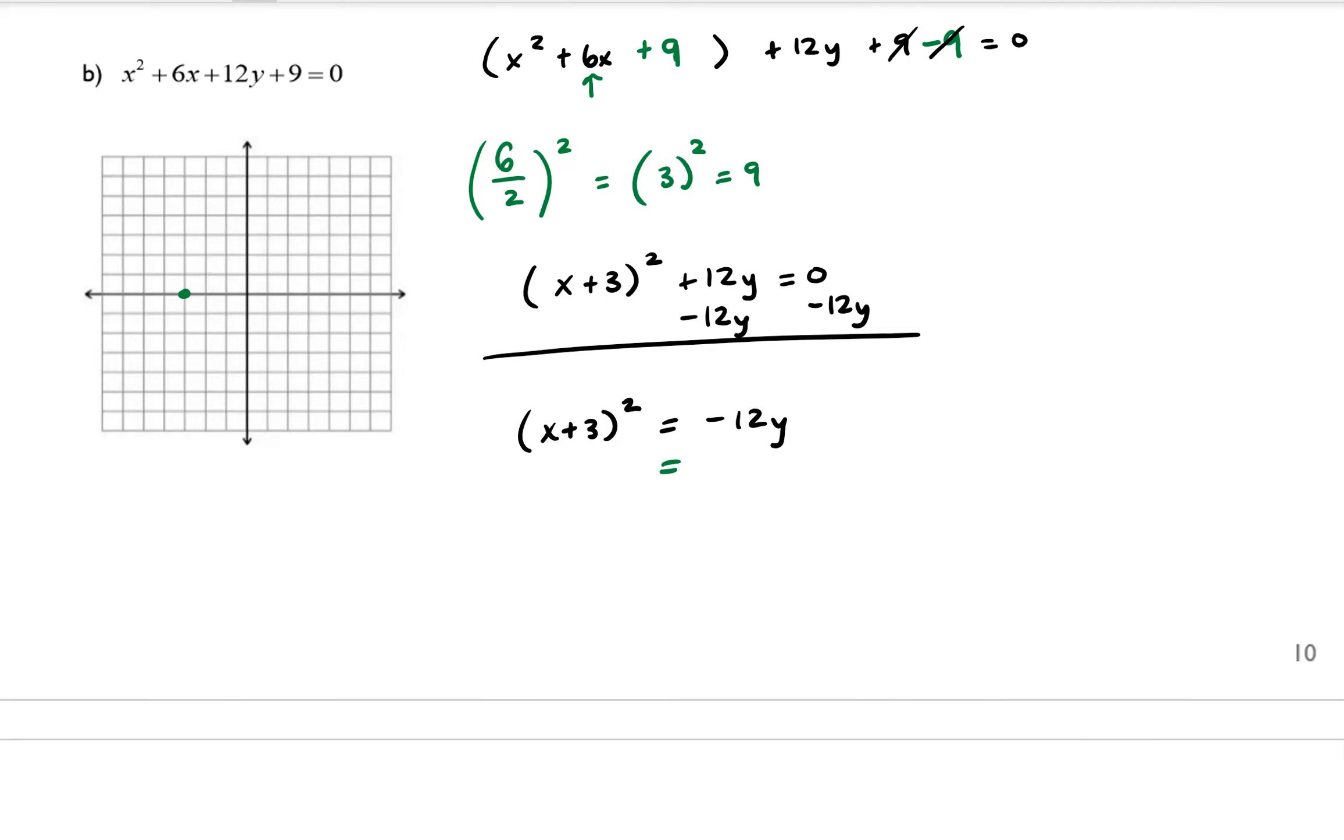So we know that this is equal to 4py. So we can take our -12 and set that equal to 4p. If we do that, we get 4p = -12. We would divide both sides by 4. And we would get p = -3. Now, because p is negative, that means that our graph or parabola is going to be facing downwards.